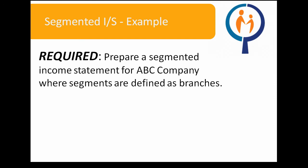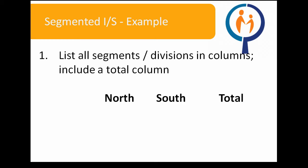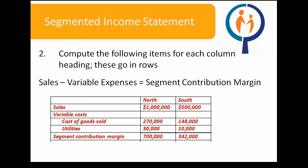The required here is to prepare a segmented income statement for ABC Company, where segments are defined as branches. We begin by listing all segments and divisions in columns as well as a total column. There are two divisions in this question, a North branch and a South branch. We then begin by finding sales revenues, variable costs, and segment contribution margins for the North and South branch. The two variable costs we have in our question are cost of goods sold and the variable portion of utility costs.